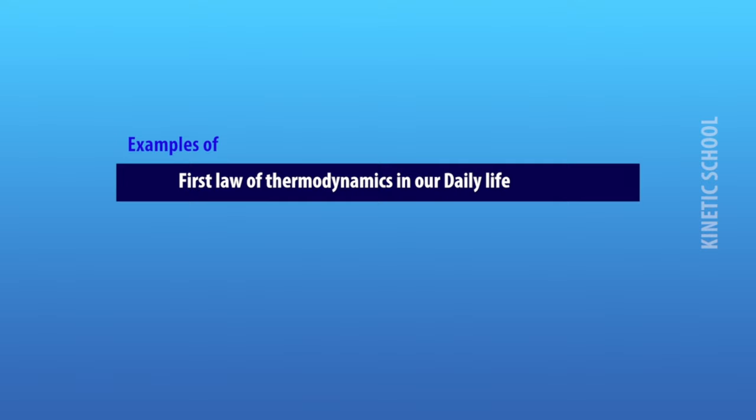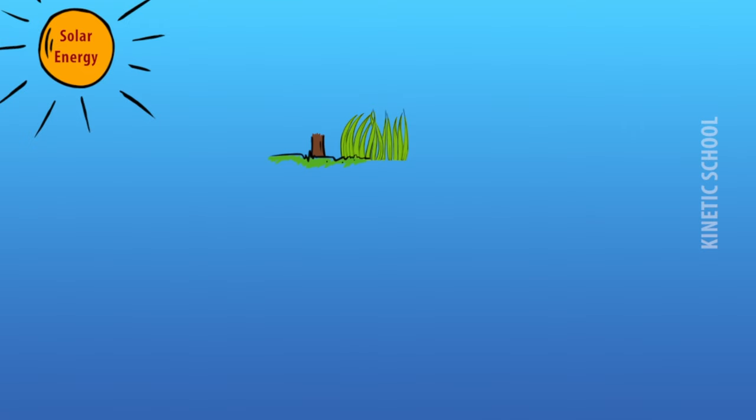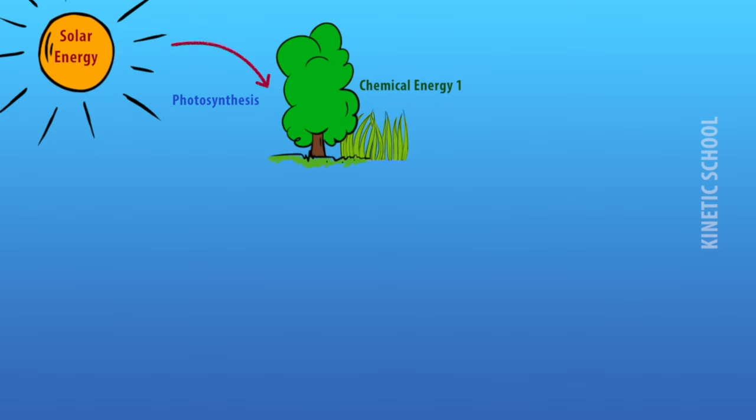Here are some examples of the first law of thermodynamics in our daily life. Green plants absorb the sun's heat energy and transform solar energy into chemical energy through photosynthesis. So heat energy is converted into chemical energy.